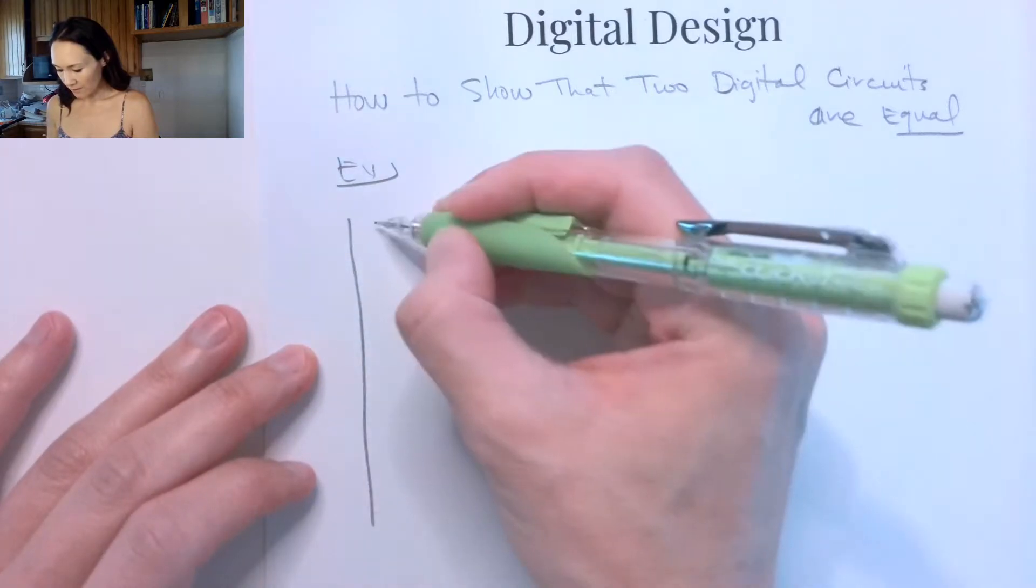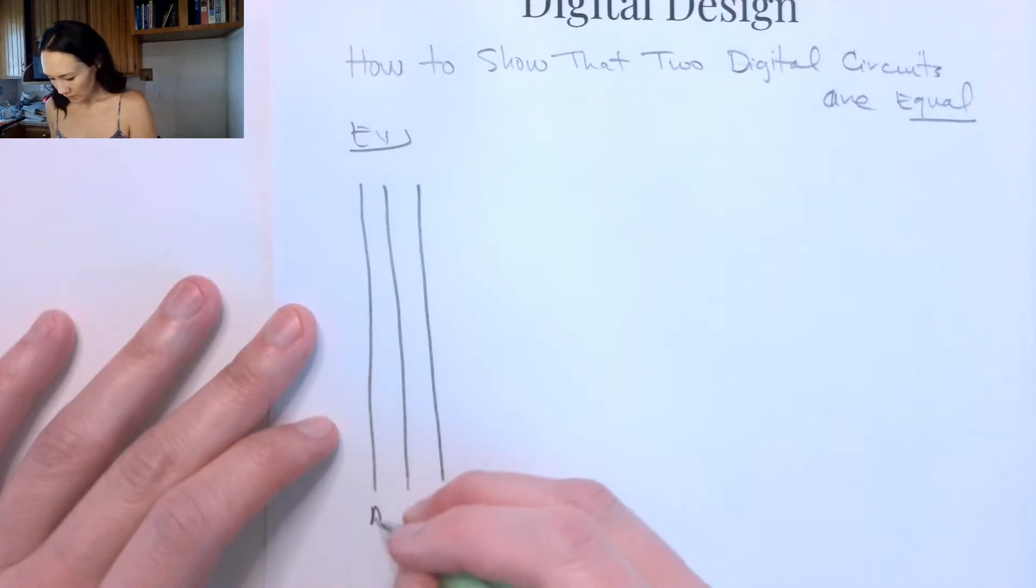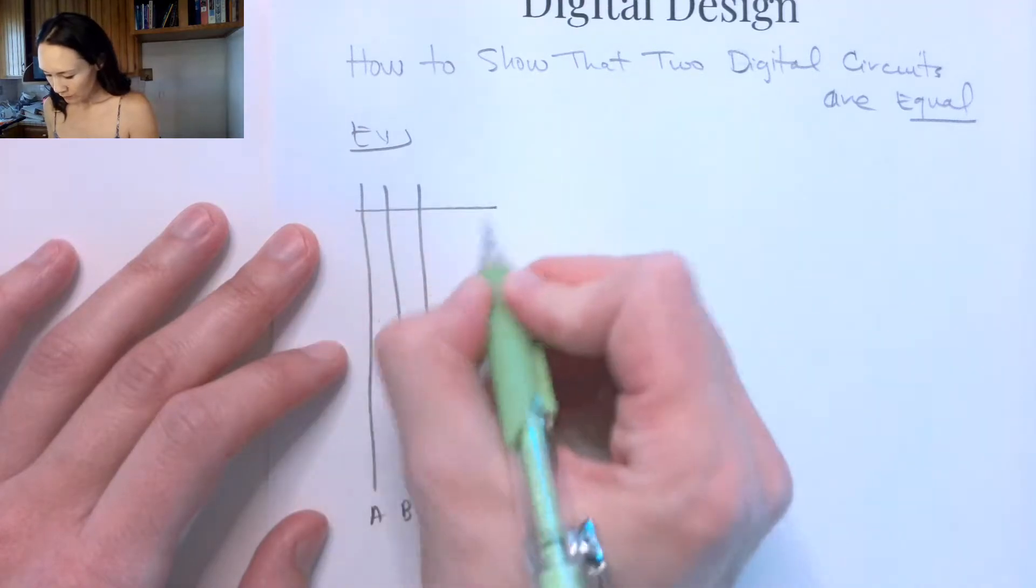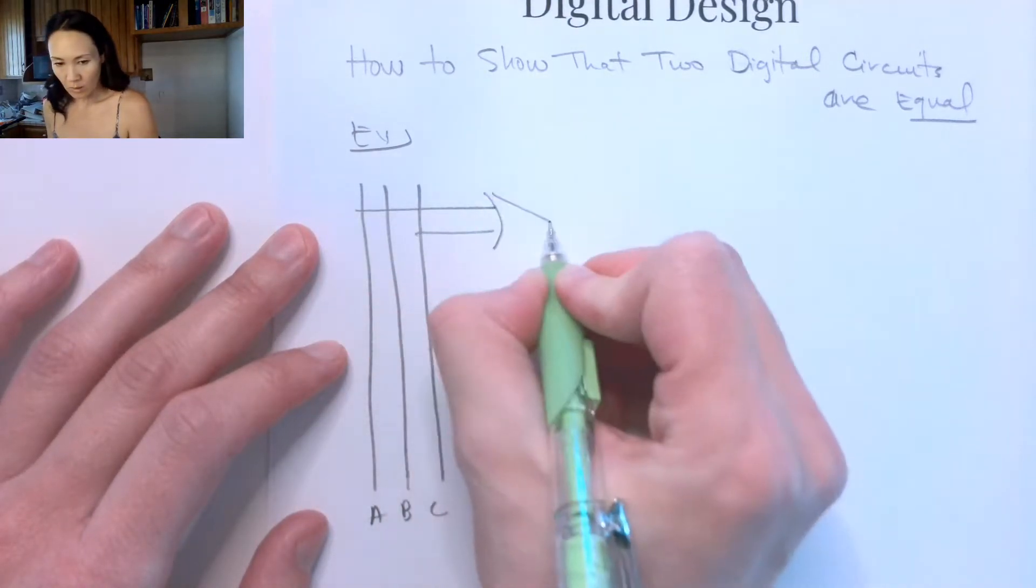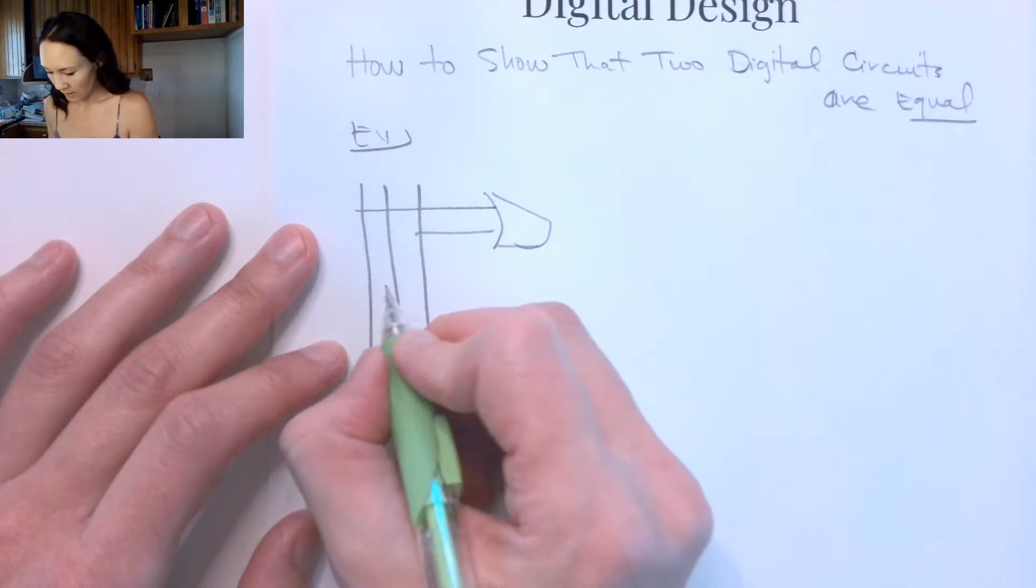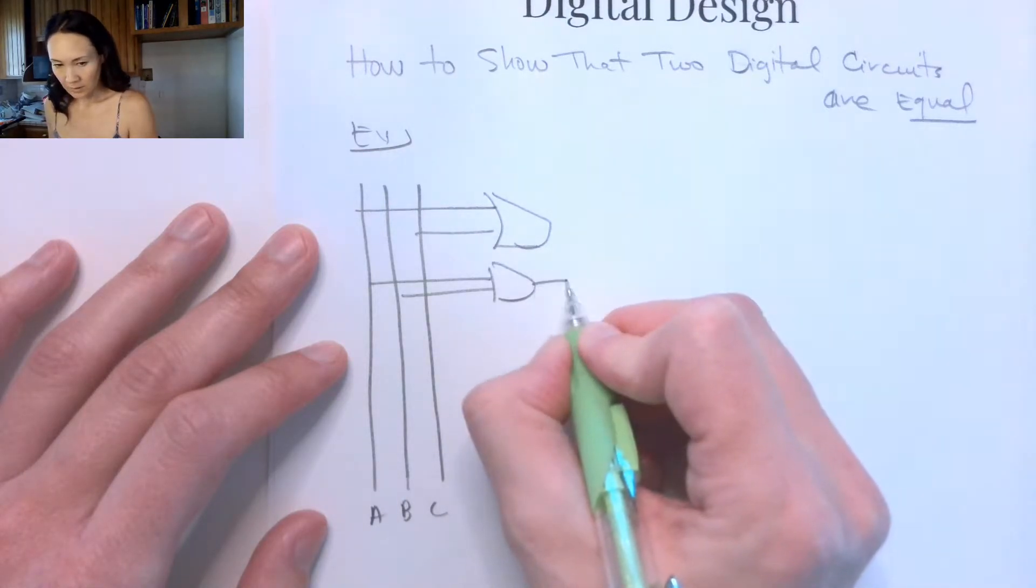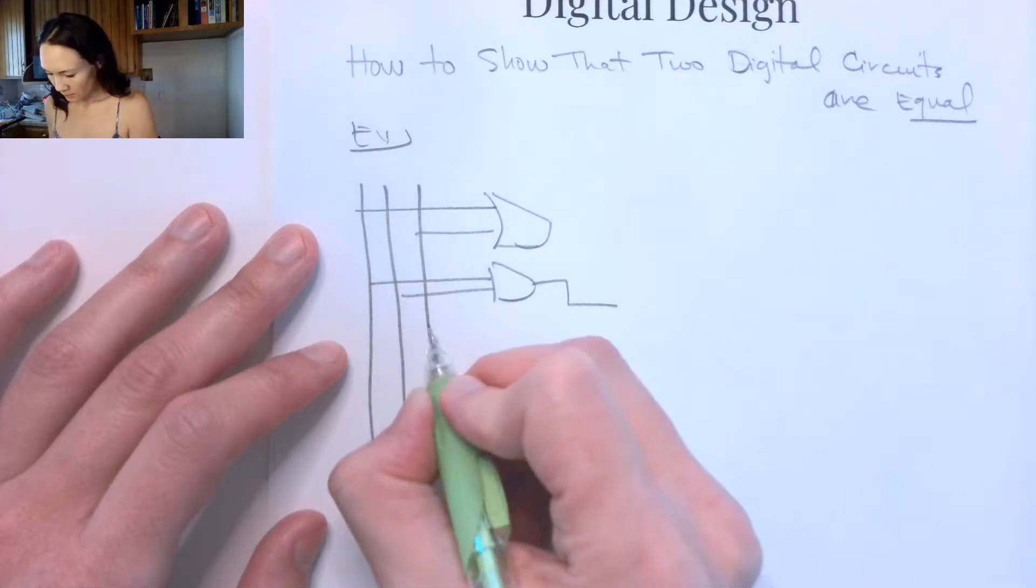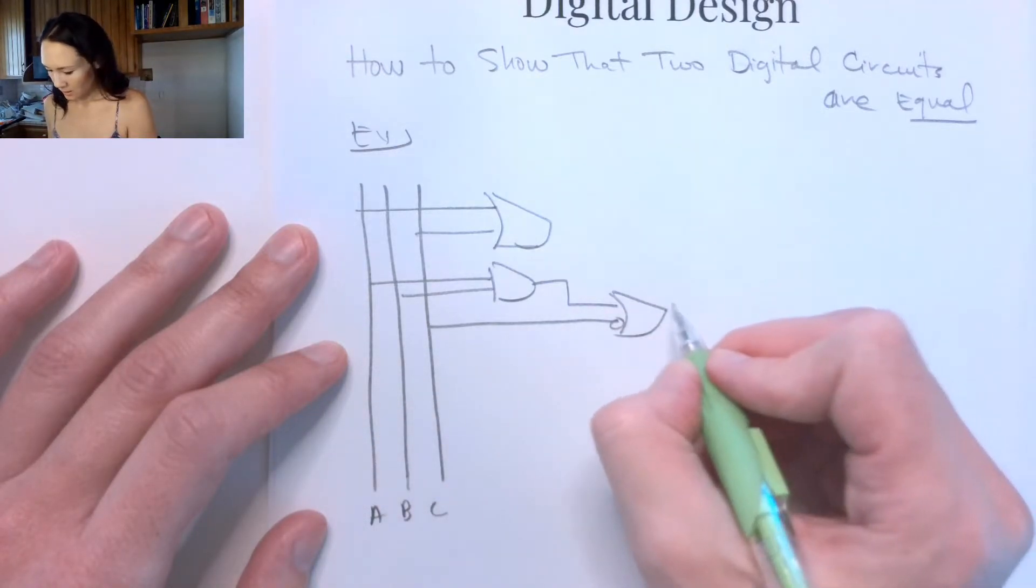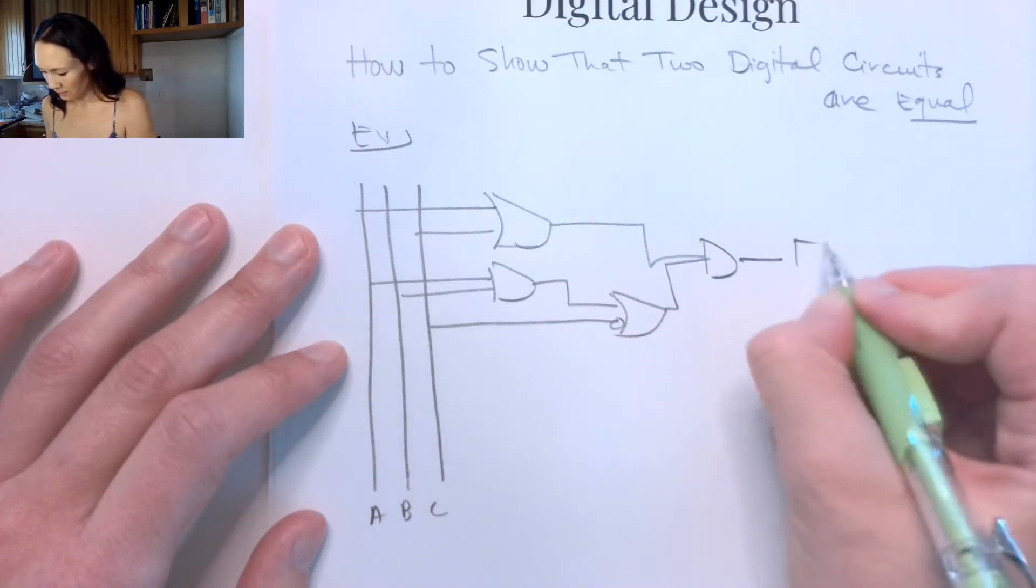Suppose we have—I'm going to write my inputs in this vertical orientation like that. So suppose we have inputs A, B, and C, and let's say our circuit looks like this. We've got A and B AND'd. Let's say this result is OR'd with not C, and then these two results are then AND'd to give us F.